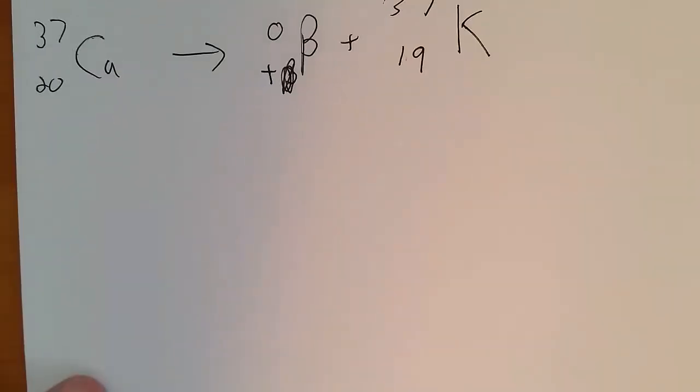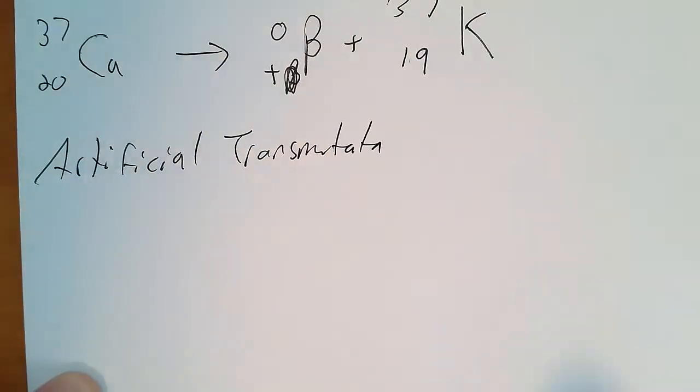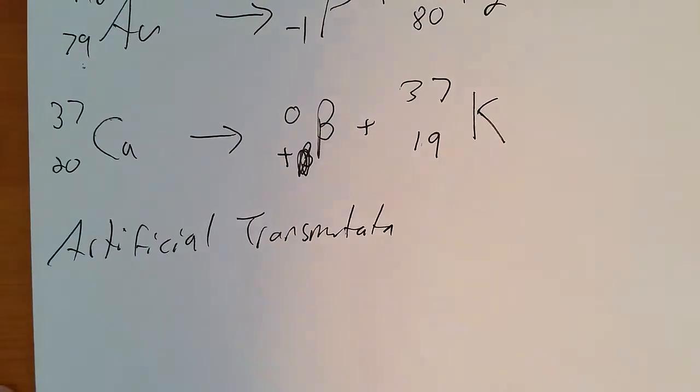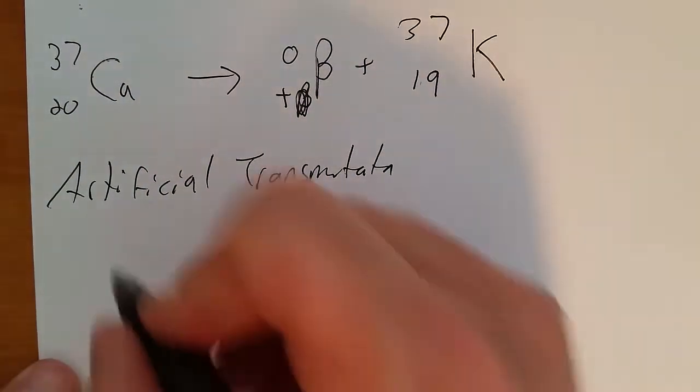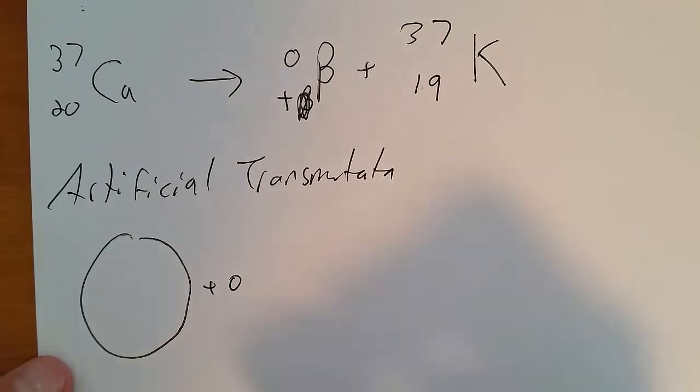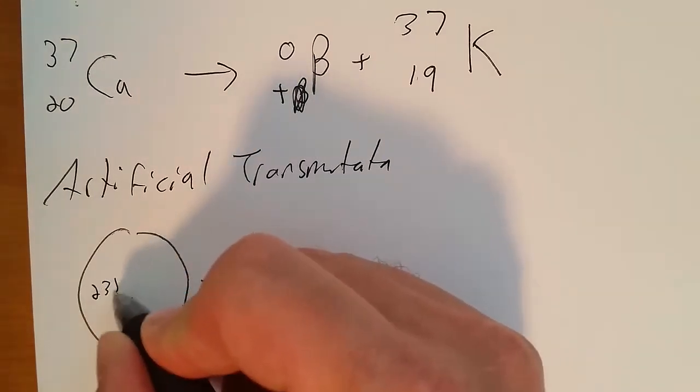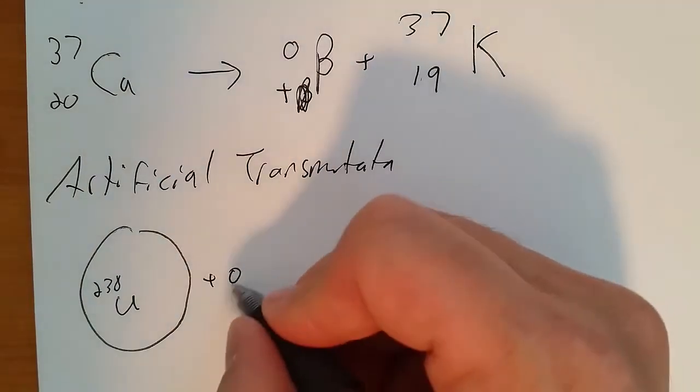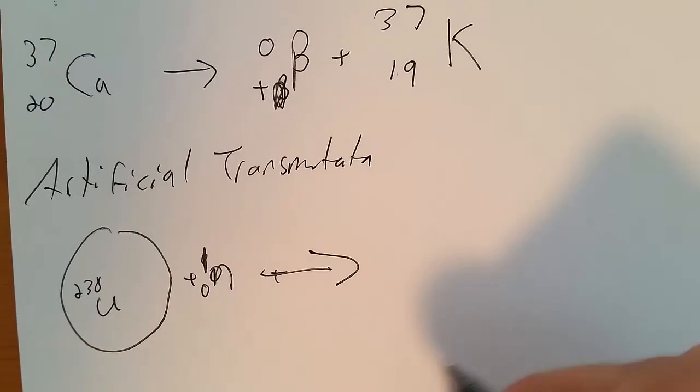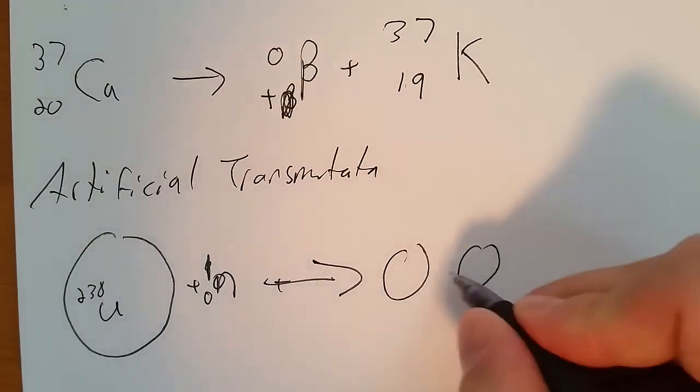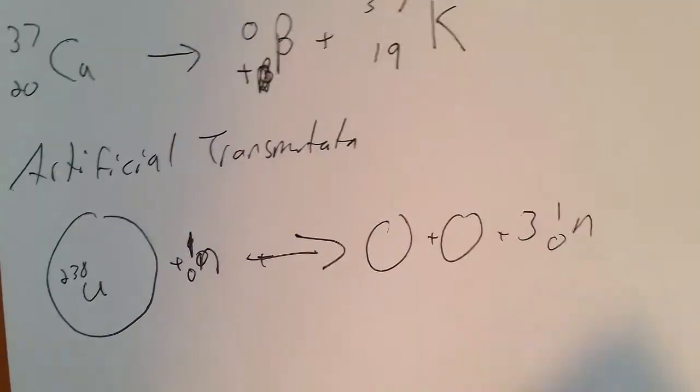You can also have artificial transmutation, where natural always had only one thing on the left of the chemical equation. Artificial will always have two things on the left. Usually it's something really big plus a bullet, like uranium-238 plus a neutron. It's going to break down into something smaller, usually two smaller things and then more neutrons. This is fission.